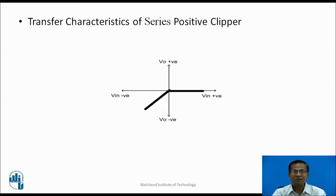Transfer characteristics of series positive clipper: When Vin is positive, diode D is reverse biased and acts as open, therefore for the complete positive duration, V0 is zero. Whereas in the negative half cycle, as Vin changes negatively, diode D is forward biased, therefore output follows the input. So the transfer characteristics is as shown.